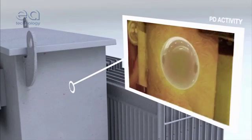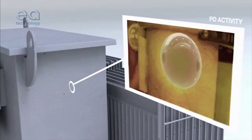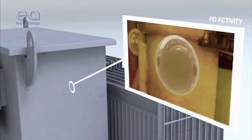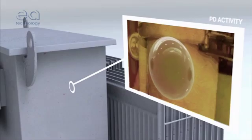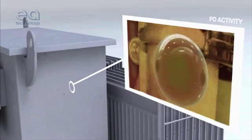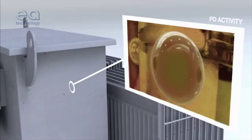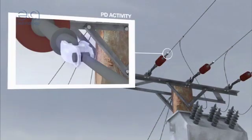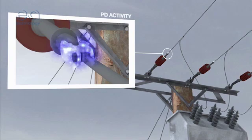This can occur in voids within solid insulation, across the surface of insulating material, within gas bubbles in liquid insulation, or around electrodes in gas, or it can produce corona.